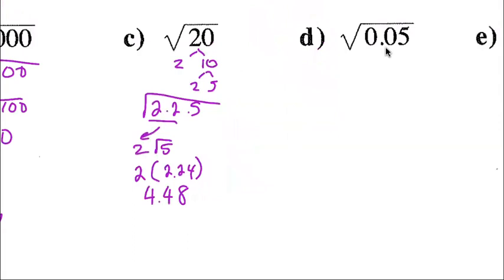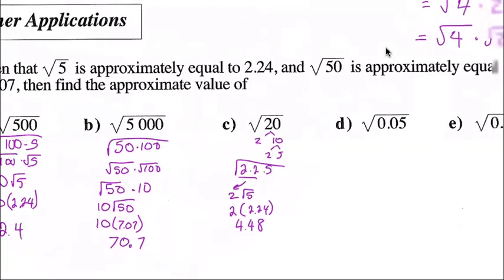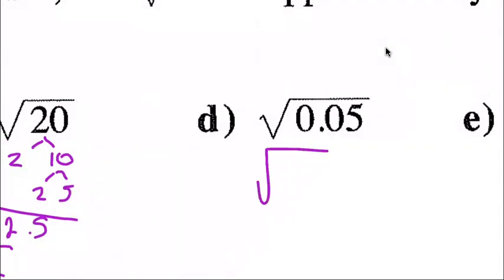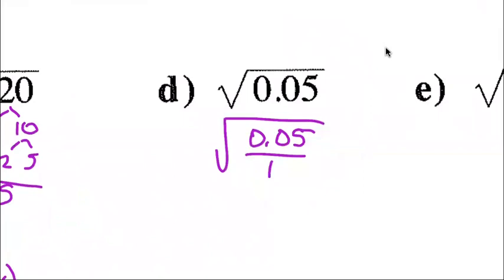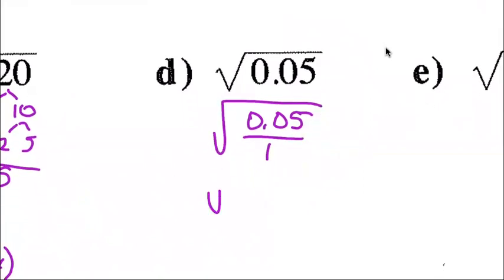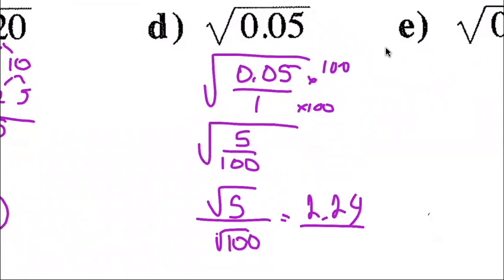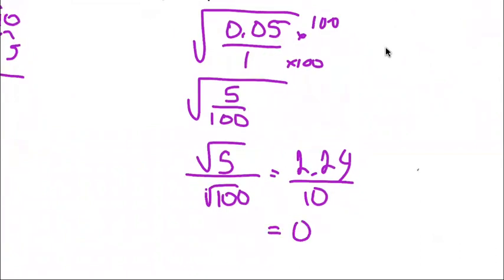For part d, square root of 0.05: I convert 0.05 to the fraction 5 over 100, then take the square root of 5 over the square root of 100. Since square root 5 is 2.24 and square root 100 is 10, dividing gives 0.224.